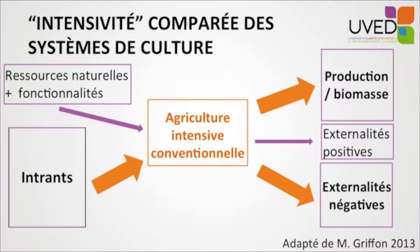With these very simple graphs, I'm trying to explain the difference between the two paradigms of conventional intensification and ecological intensification. Conventional intensification is what we have seen in the industrial revolution in northern hemisphere countries, the green revolution in southern hemisphere countries. It's agriculture based essentially on inputs and very little on natural resources and natural functionalities, and entirely centered on production and biomass.